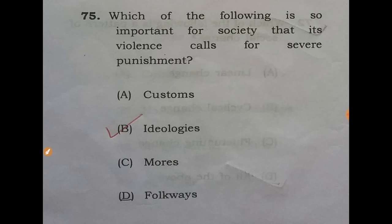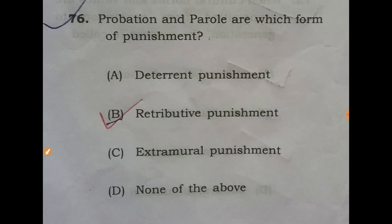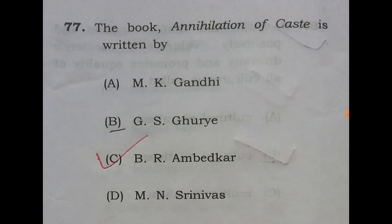Question 75: which of the following is so important for society that it invites severe punishment? The answer is C: Mores. Next question 76: probation and parole are which form of punishment? The answer is B: retributive punishment.